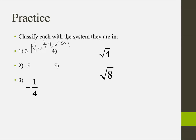Feel free to pause the video and see if you can answer problems 2 through 5. Try to find the most specific family each number is in. Negative 5 — my most specific would be integers. It's negative, it's one of our counting numbers but on the negative side of the number line. It would also fall into the rational numbers and the real numbers, but most specifically: integers.